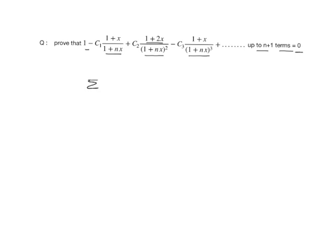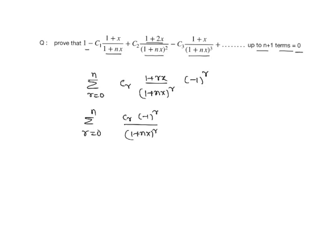The r-th term is: sigma from r=0 to n of Cr times (1+rx)/(1+nx)^r times (-1)^r. To solve this, we separate it as sigma from r=0 to n of Cr times (-1)^r divided by (1+nx)^r, plus sigma from r=0 to n of rx divided by (1+nx)^r times Cr times (-1)^r.